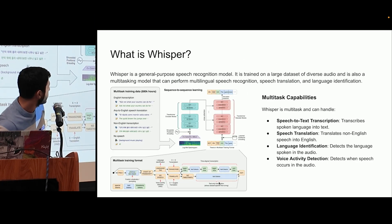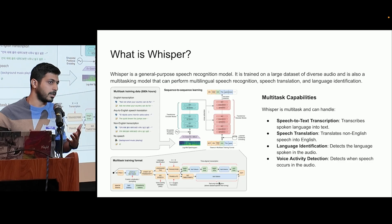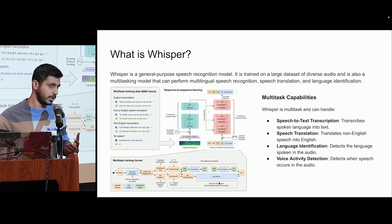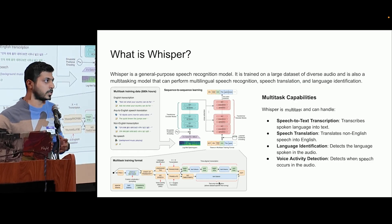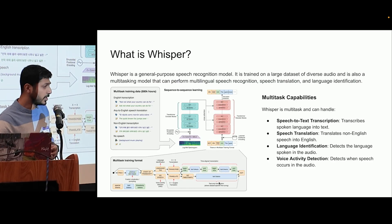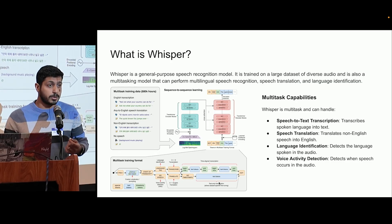Whisper is a kind of encoder-decoder model, very similar to GPTs. GPTs generally take text as input and text as output, whereas Whisper is a model which takes audio as input and gives text as output. So basically it is for audio transcription, automatic speech recognition. Other than transcription, Whisper can also do speech translations, and it can identify different languages if set in multilingual mode.